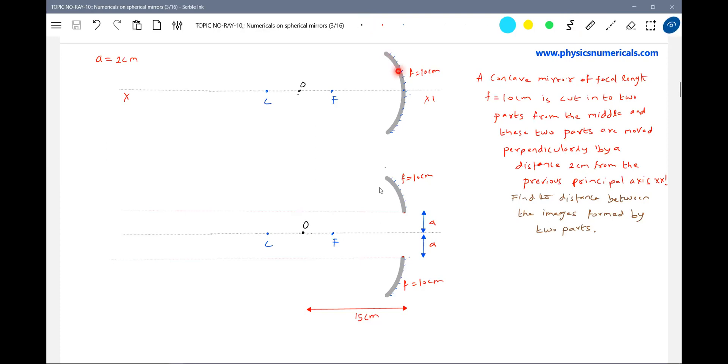I have a concave mirror of focal length - converging mirror or concave mirror, whatever you call it. The focal length is 10 cm and an object is kept at a distance of 15 cm from the concave mirror.